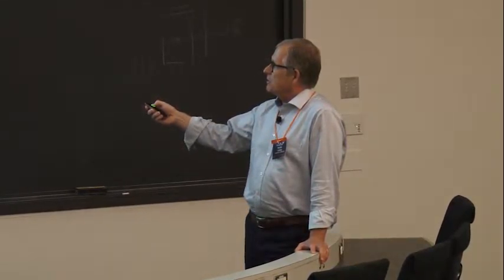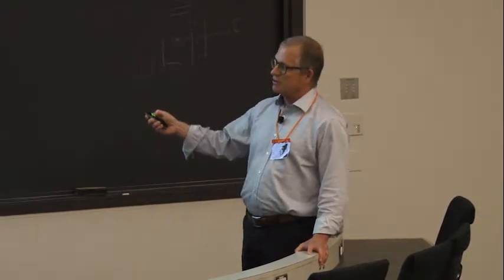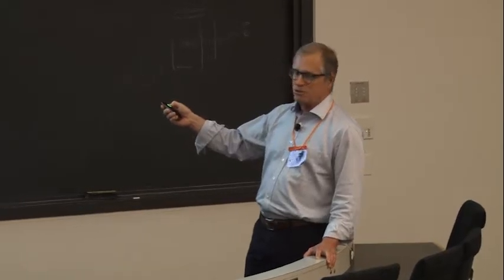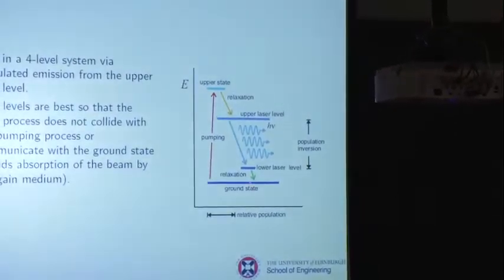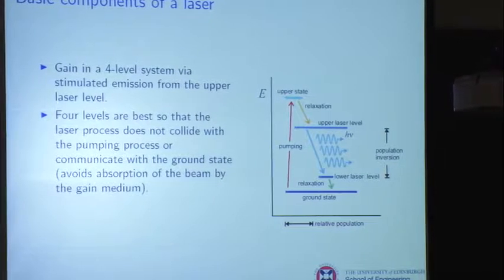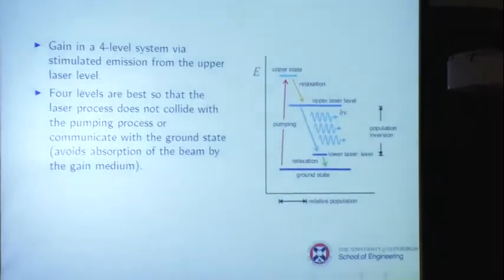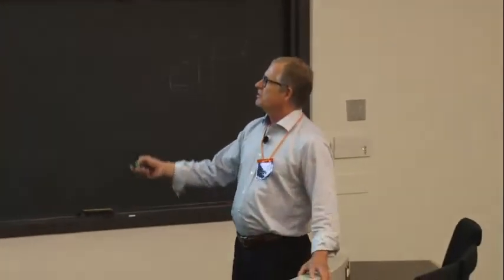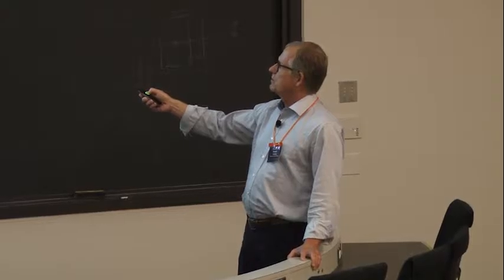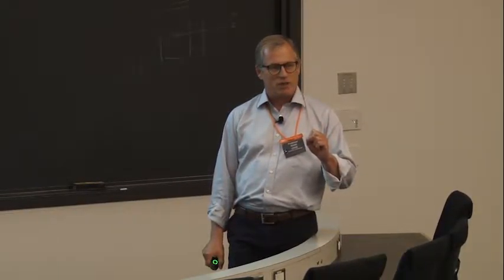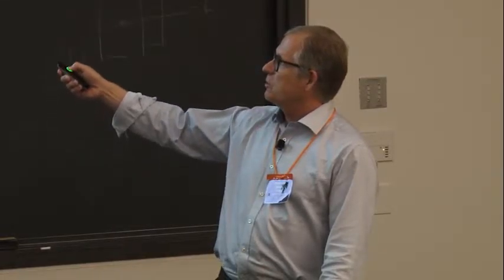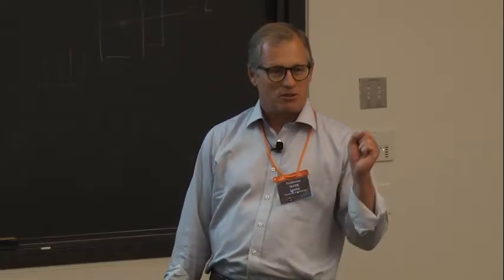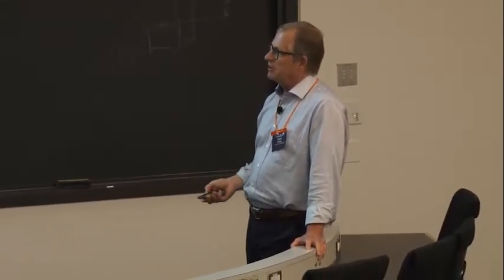The lower laser level should quickly dump down to the ground state. You don't want the lower laser level to be the ground state because then it would absorb these photons and chew up its own light. The very first laser ever demonstrated was a ruby laser — chromium in sapphire — and ruby is a three-level laser. The only way they got that to lase was with a flash lamp, so it was a pulsed, gain-switched laser. It would flash, send a lot up to the upper level, it would come down, give out a burst of light, and shut itself off. You don't want a three-level laser — you want a four-level laser, and most gain media used nowadays are four-level.